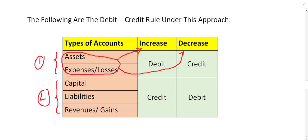If someone asks you to define debit or credit, you can say: debit means an increase in asset or an increase in loss and expenses, and credit means a decrease in asset and loss and expenses.